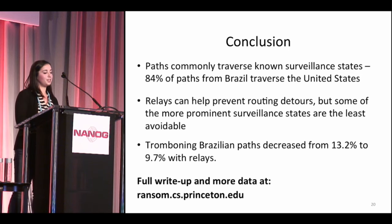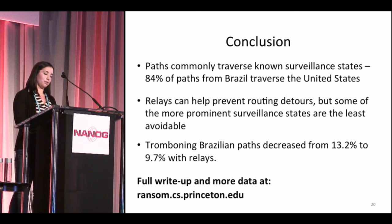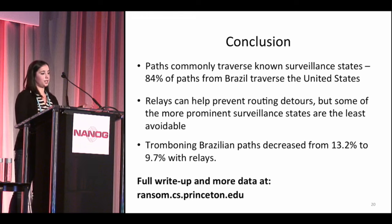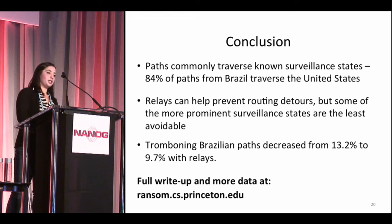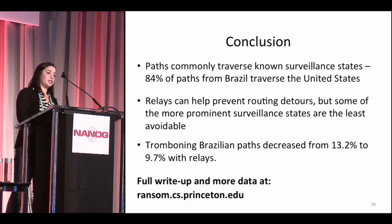To conclude with the main findings: paths commonly traverse known surveillance states — in particular, 84% of paths originating in Brazil traverse the United States despite all the extreme measures Brazil is taking. We also found that relays can help prevent routing detours through surveillance states. But unfortunately, some of the most prominent surveillance states are also the least avoidable. These relays also help keep local traffic local, as evidenced by decreasing tromboning paths. More data and a full write-up are available at our project website, ransom.cs.princeton.edu.